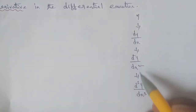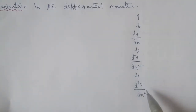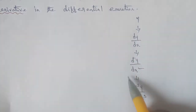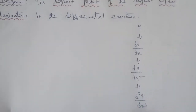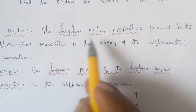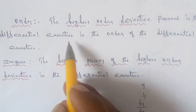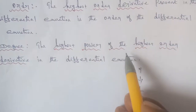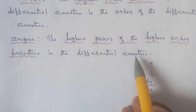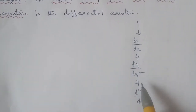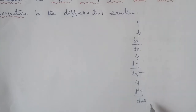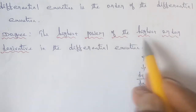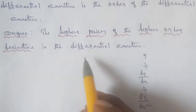So as we differentiate further, the order increases. The highest order derivative present in the differential equation is called the order. The highest power of the highest order derivative in the differential equation is called the degree.